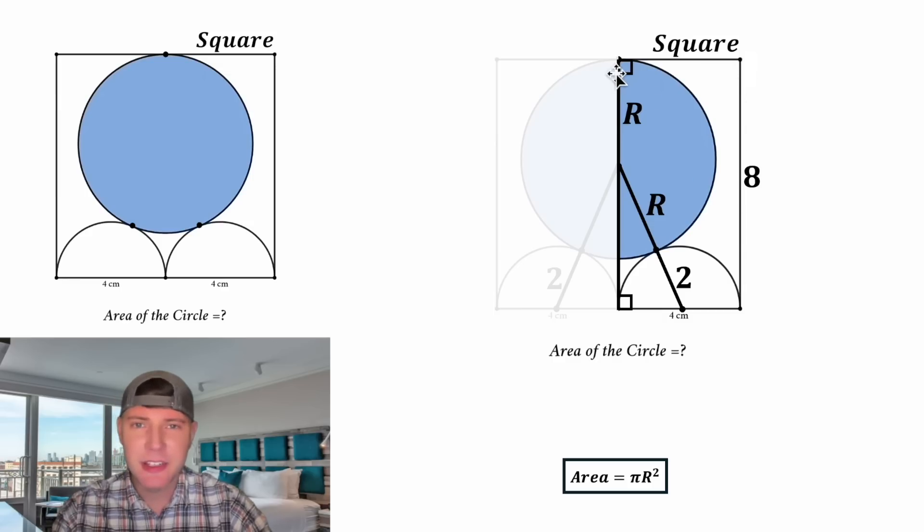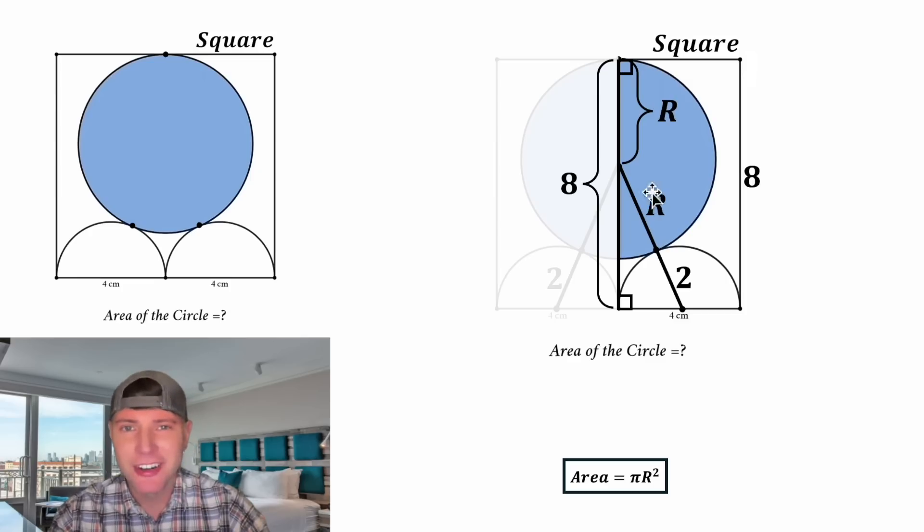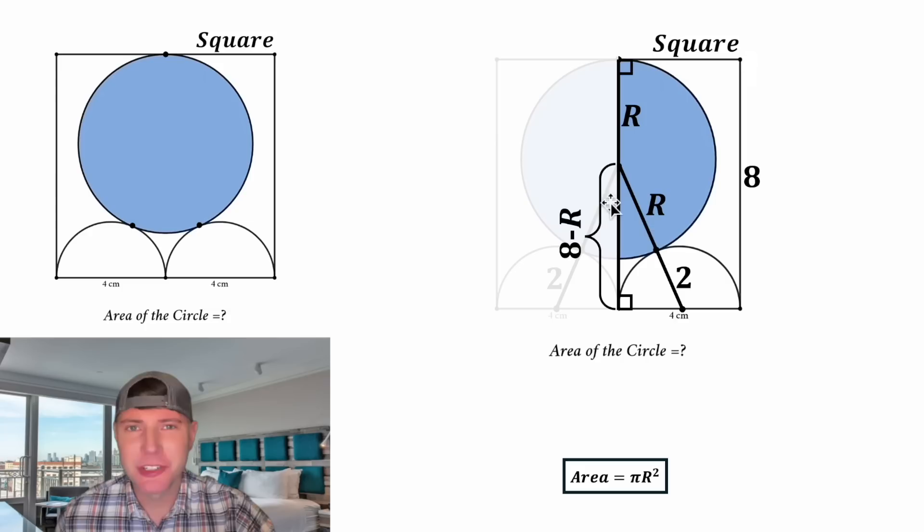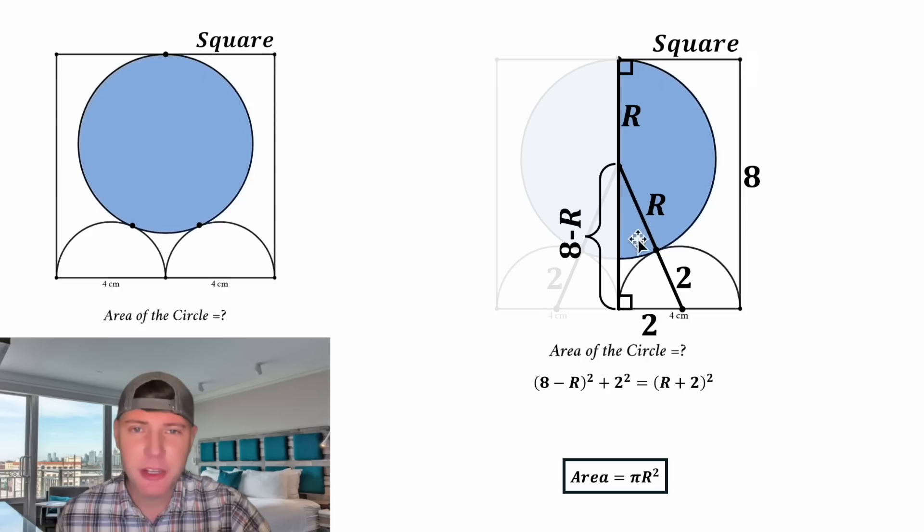Since this is equal to eight, all of this will also be equal to eight. And then we know this piece is equal to R. So this remaining portion will be equal to eight minus R. And now we have the height of this right triangle. And then the base of the right triangle is a radius of this semicircle. It's going to be equal to two. And now we can do the Pythagorean theorem. It'll be the quantity eight minus big R squared plus two squared equals the quantity big R plus two squared.